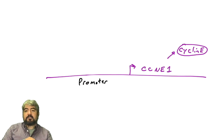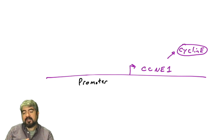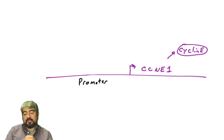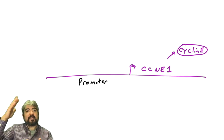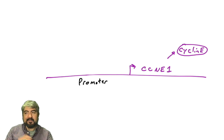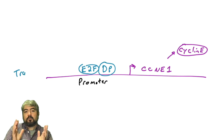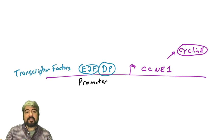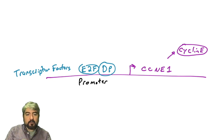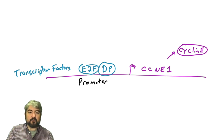Let's talk about cyclin E. Cyclin E is coded for by a gene called CCNE1. I've drawn the gene and promoter. It's a cyclin, so its levels must be low and then increase. How do we regulate the expression level of a protein? We can regulate it at the gene level. What regulates the transcription of cyclin E? E2F and DP — those transcription factors — can bind the promoter of the CCNE1 gene and turn on the gene to produce cyclin E protein.